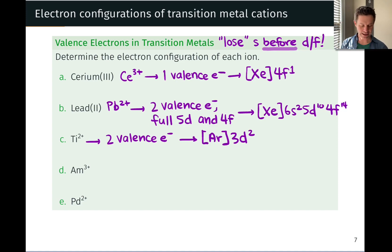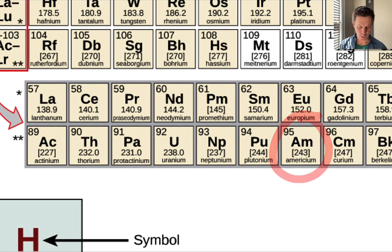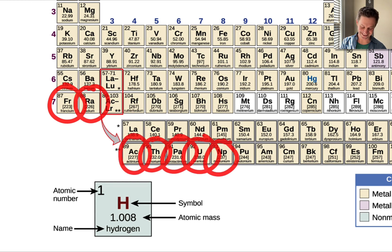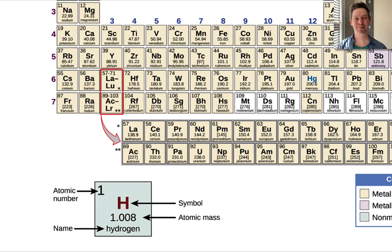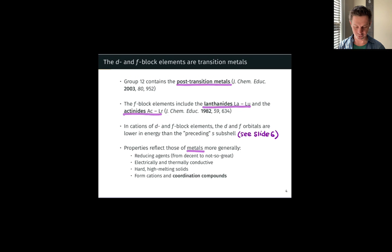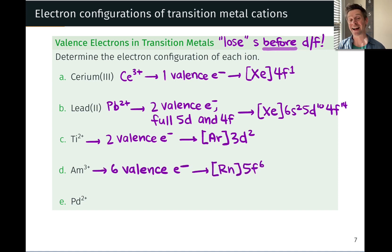Americium — Am³⁺ — americium is an actinide. When neutral, counting from francium, it has nine valence electrons. Am³⁺ therefore has six valence electrons. Because this is an actinide cation, all valence electrons go into the F subshell — the valence F subshell for americium is 5F. So the configuration is [Rn]5f⁶.